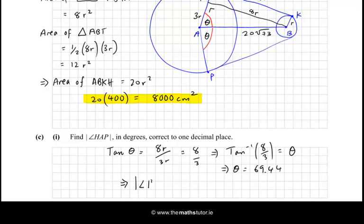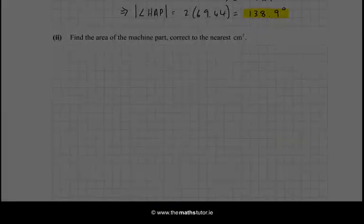So, therefore, the size of the angle HAP is twice 69.44, which is 138.9 degrees to one decimal place. Okay, so let's move on.